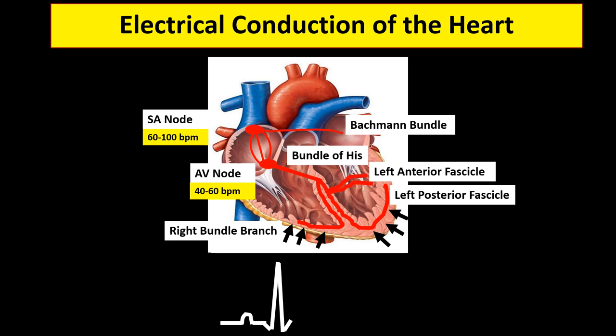The conducting system below the bundle of His is also a subsidiary pacemaker with an inherent beat of 20 to 40 beats per minute. While the ventricles undergo depolarization, concomitantly atria undergo repolarization. However, atrial repolarization cannot be seen on surface ECG because it is too low in amplitude, so it is buried within the QRS complex. Then ventricles undergo repolarization, which can be seen on surface ECG as the T wave.